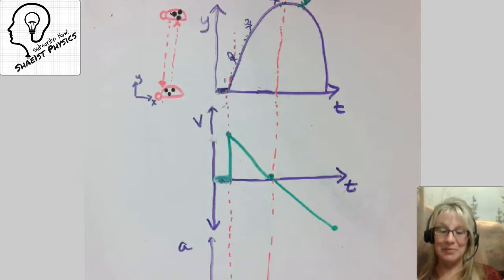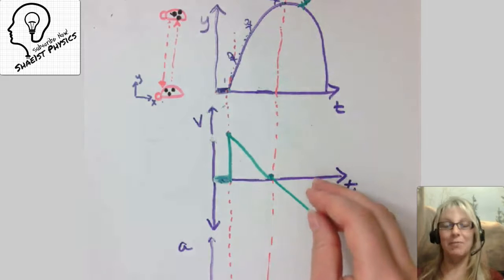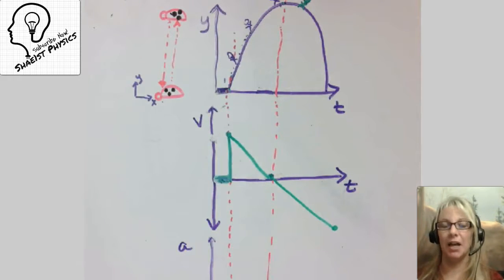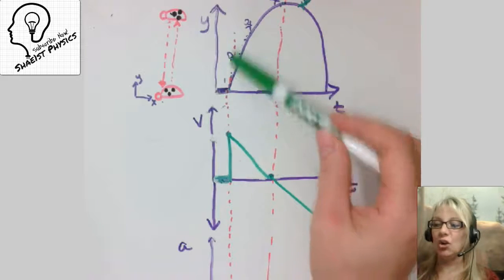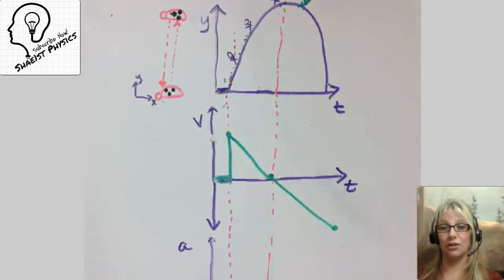Now, a lot of times when you go to draw the velocity time graph, many of my students will kind of draw the same thing. Remember, it's not the same thing. Your velocity is just the slope of that position curve.